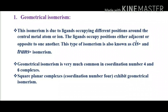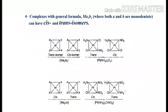Geometrical isomerism is due to ligands occupying different positions — either adjacent or opposite — around the central metal atom. In complexes with general formula MA2B2, both cis and trans isomers are possible. For example, in diamminedichloroplatinum(2), in the trans isomer the chloro and amine ligands are on opposite sides, while in the cis isomer they are on the same side. Another example involves chloro nitrato diamine platinum, where cis has amine ligands on the same side and trans has them on opposite sides.